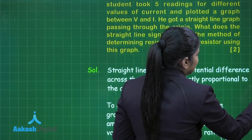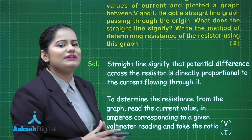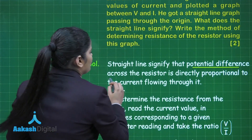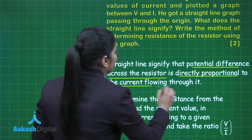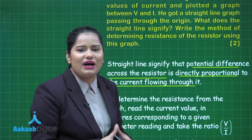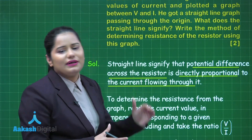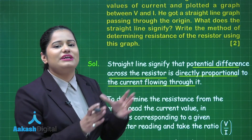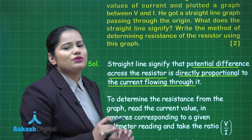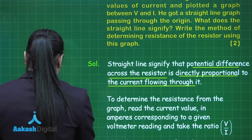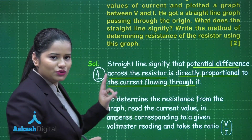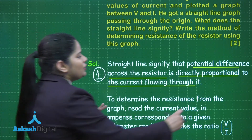The first part asks what the straight line signifies. The straight line signifies that the potential difference across the resistor is directly proportional to the current flowing through it. You can also write that the straight line signifies the resistor is following Ohm's Law, or that V is directly proportional to I. Any of these answers will score you one mark for this part of the question.